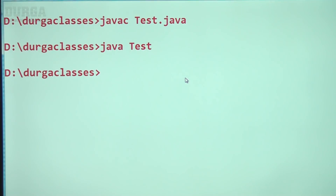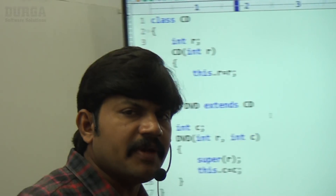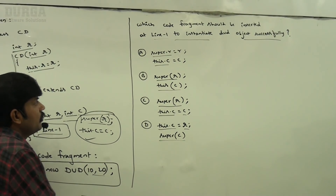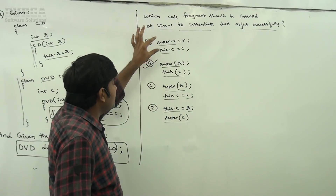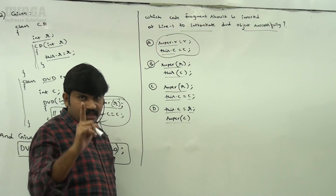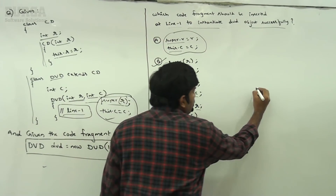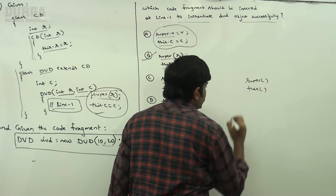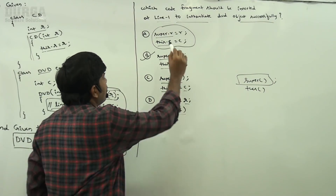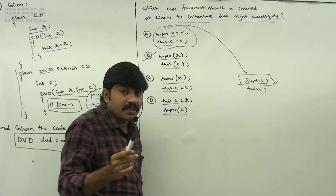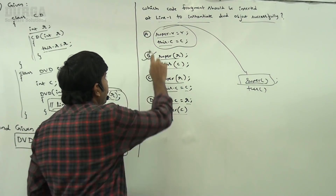If I execute this code, it runs fine. Now, why is the first option wrong? The first line inside every constructor should be either super or this. If you are not writing anything, the compiler is always going to place super() without any argument. But the parent class doesn't contain a no-argument constructor — that's why you immediately get a compile-time error. That's why option A is invalid.